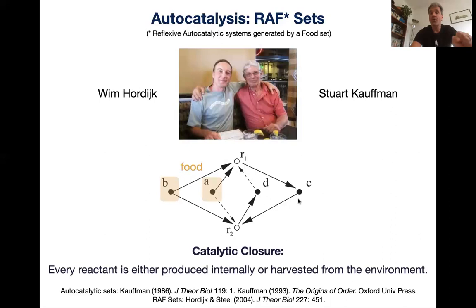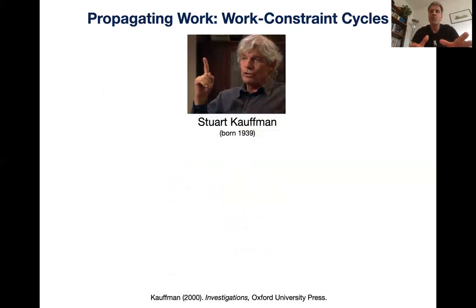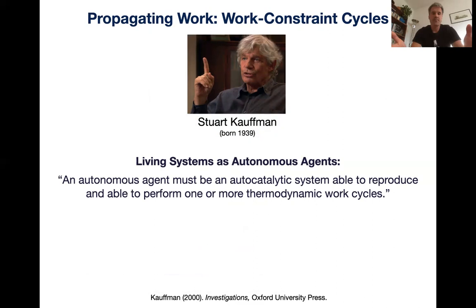He thought about this in much more thermodynamic terms than Rosen — much less abstract. He says living systems are autonomous agents. An autonomous agent must be an autocatalytic system, able to reproduce and able to perform one or more thermodynamic work cycles. Reproduction here doesn't mean having children; it just means self-maintenance, which is a property of its autocatalytic nature.